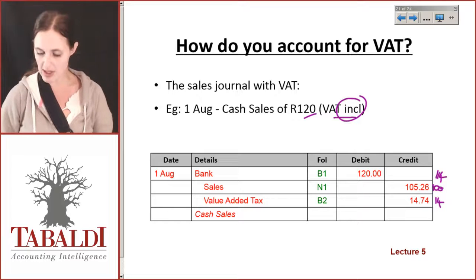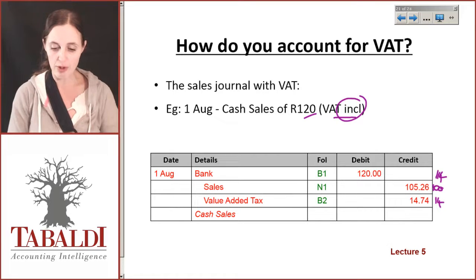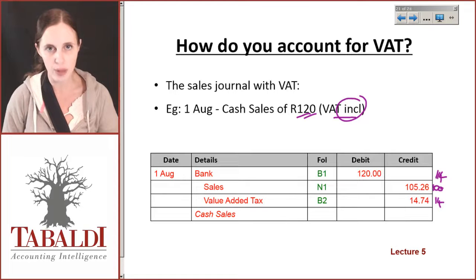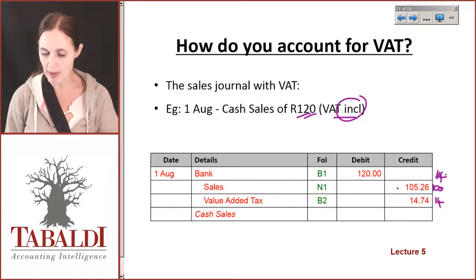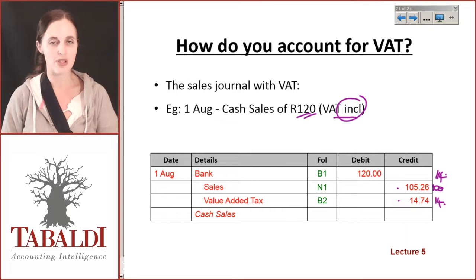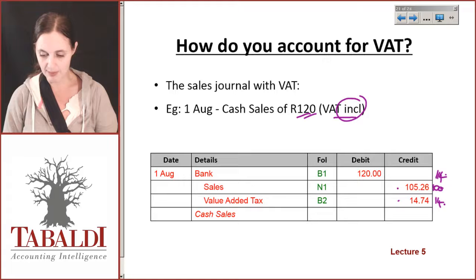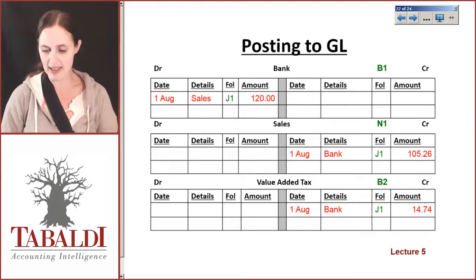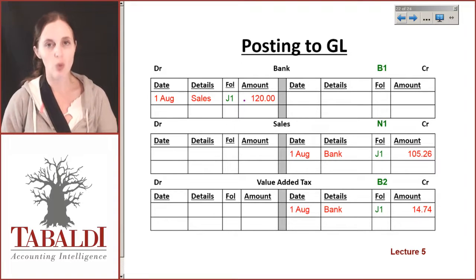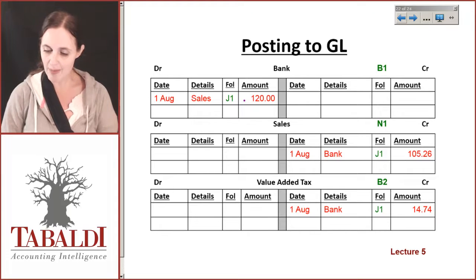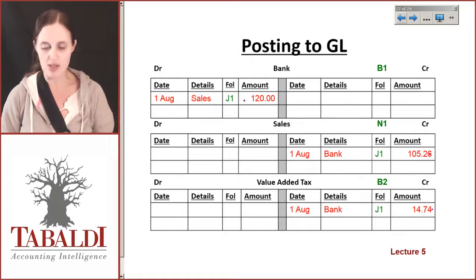You can see why in the previous lecture I said it's very important to be able to work out the VAT exclusive amount. If we take 120 Rand, divide it by 114, and multiply by 100, we get 105.26 — and that will be my sales amount. If we take 120 Rand, divide it by 114, and multiply by 14, you get 14.74 — which will be your VAT amount. The journals would be exactly the same structure, but the amounts would be different. We would still debit bank, but the amount will now be 120. My sales amount is 105.26 and my value added tax is 14.74.